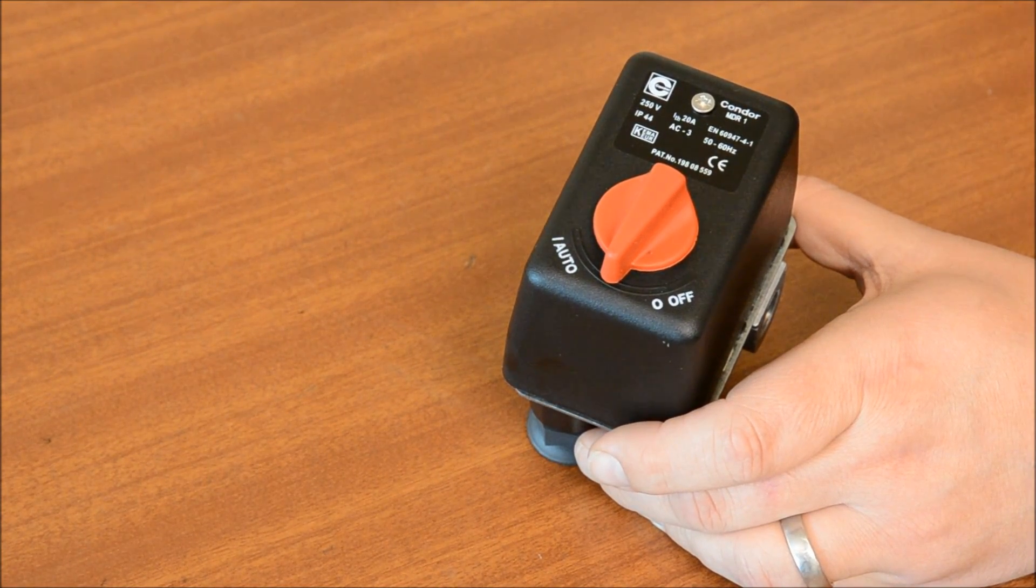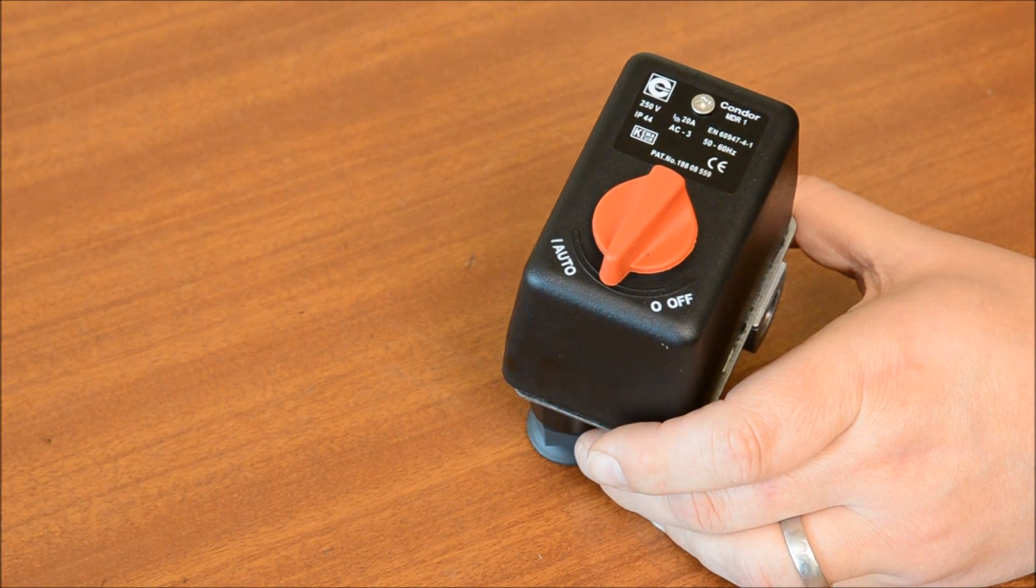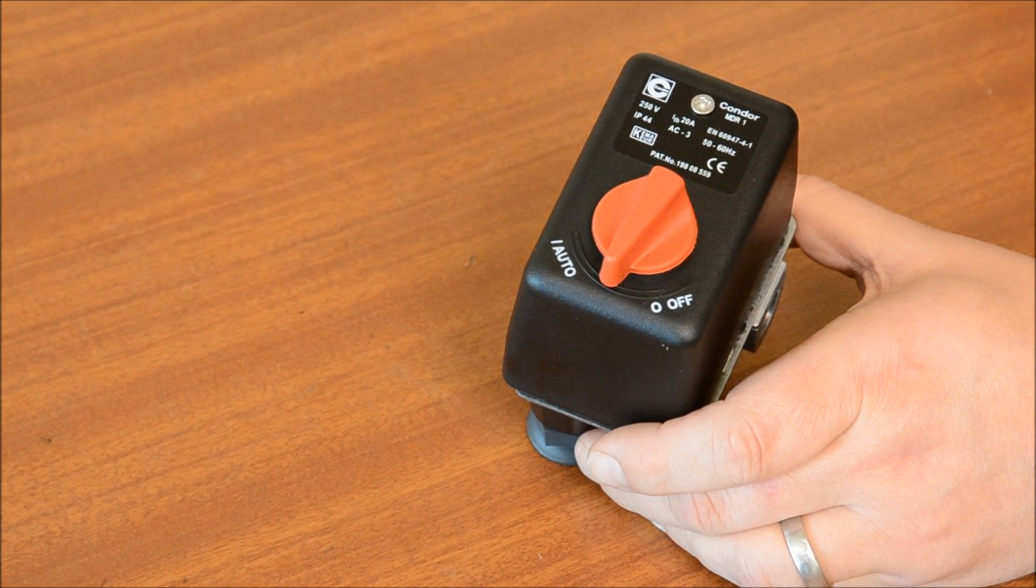The MDR1 pressure switch is the most common type of switch for single phase compressors or can be used to provide a signal to the control circuit in larger compressors.